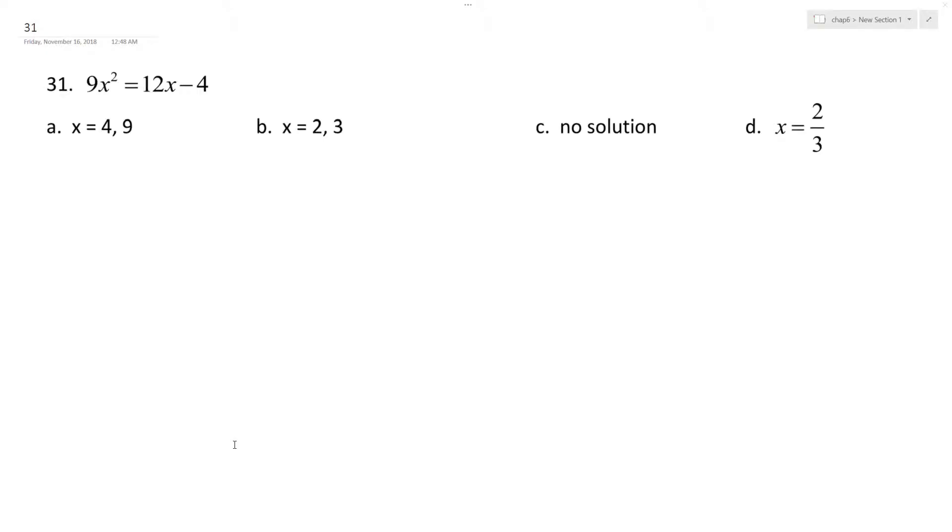Alright, we want to solve the following problem. Factor it and find the roots. So I'm going to move everything over to one side, minus 12x plus 4 equals 0.